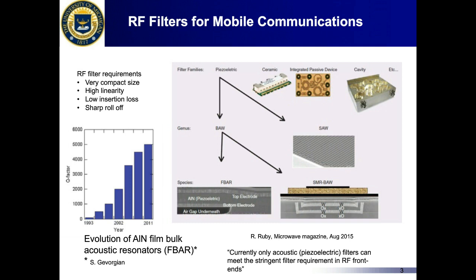Current filters are based on aluminum nitride piezoelectric resonators. The evolution of aluminum nitride-based resonators shows that Q values achievable in the 1990s were around a couple of hundred, but today's resonators can achieve Q values of 5,000 or higher. However, current aluminum nitride-based filters are not tunable or switchable. Therefore, in order to select a particular band and filter, switch plexers must be used in front of filters.